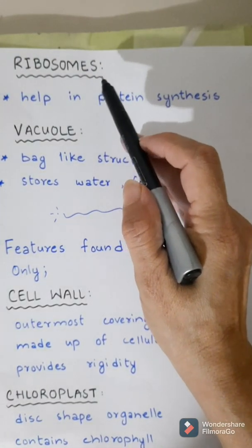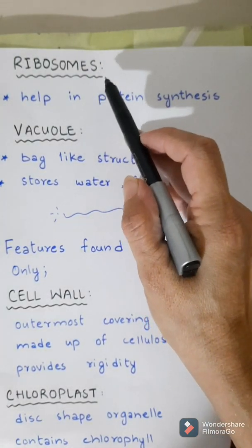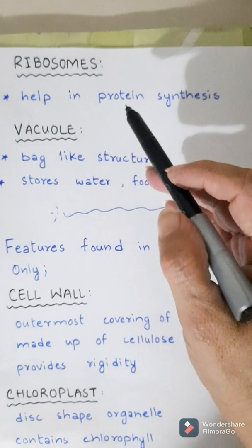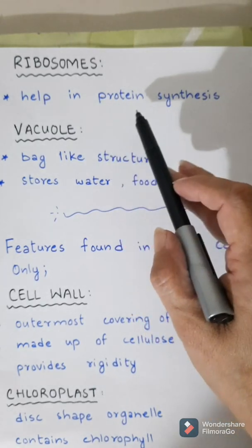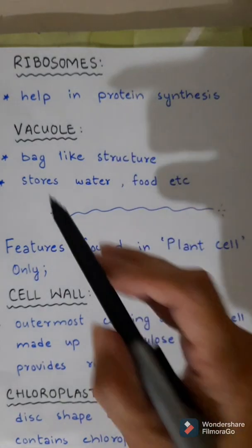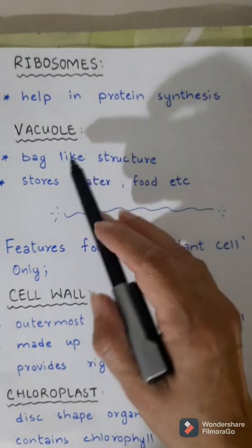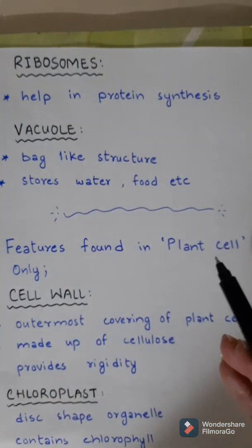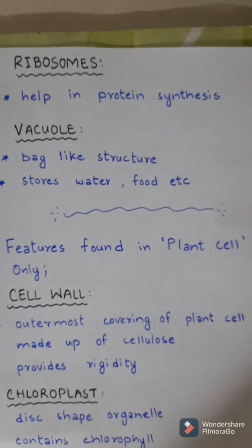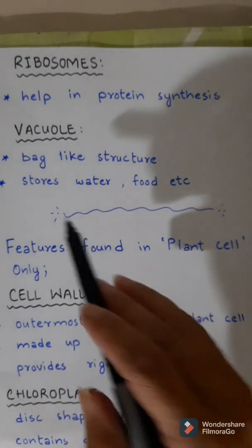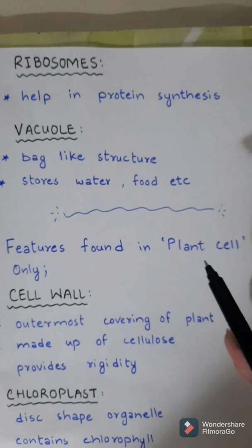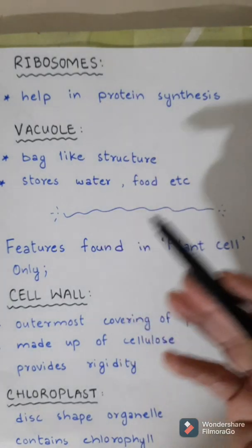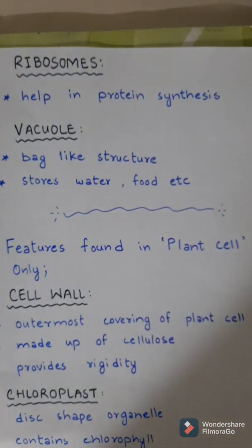Ribosome is another organelle present in both plant and animal cell. It helps in the making of proteins. Then we have the vacuole: a bag-like or bubble-like structure which is also a storehouse for the cell. Why a storehouse? Because it stores different materials in it — for example, water, food, waste materials, etc.